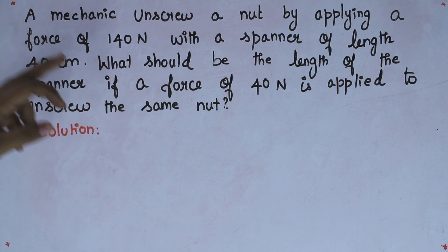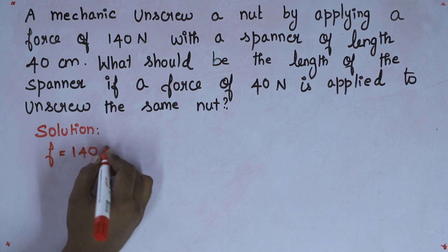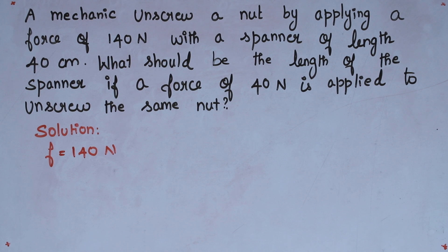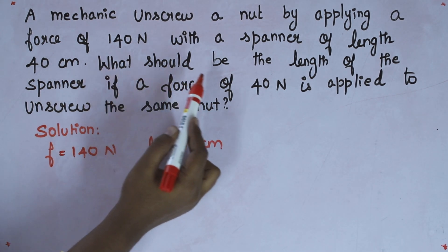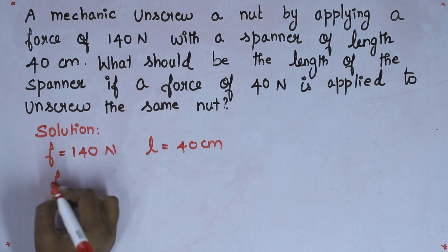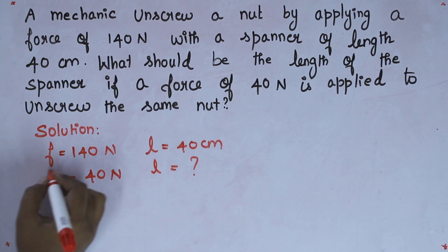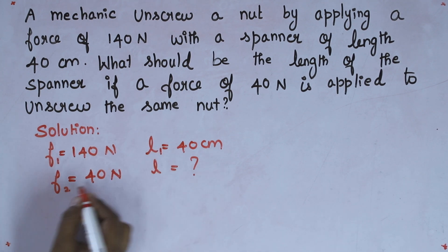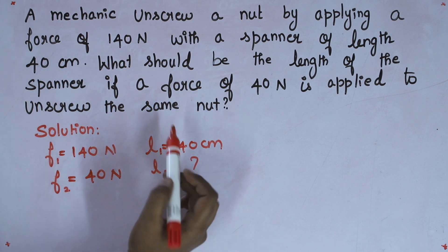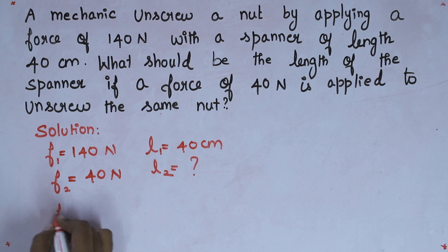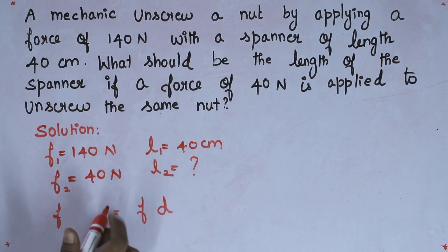A mechanic unscrews a nut by applying a force of 140 Newton with a spanner of length 40 centimeter. What should be the length of the spanner if a force of 40 Newton is applied? I am naming the values as F1, L1, F2, L2 — we do not know L2, we have to find it. The formula for moment of force is F into D, and since they are unscrewing the same nut, F1 times L1 equals F2 times L2.